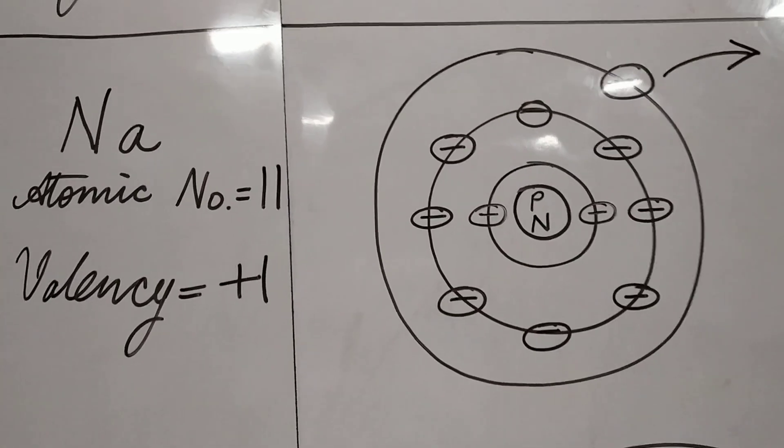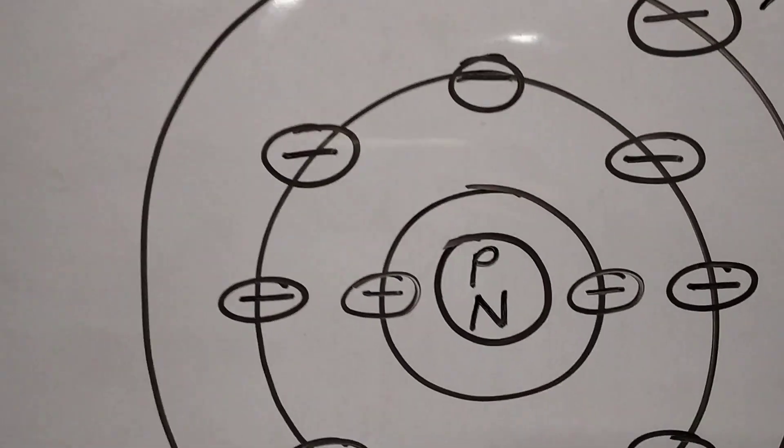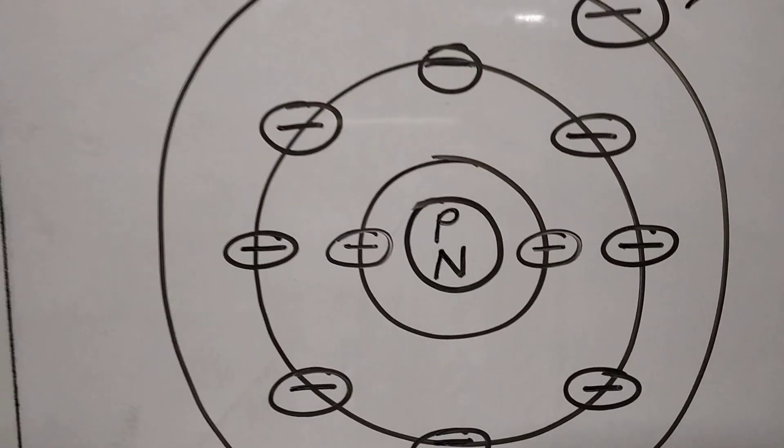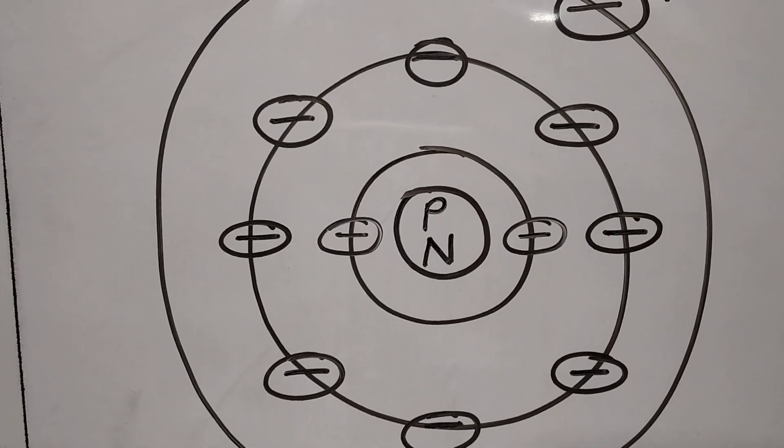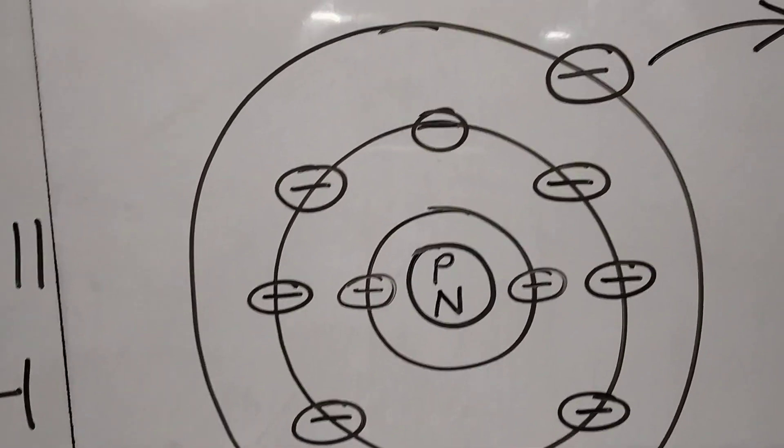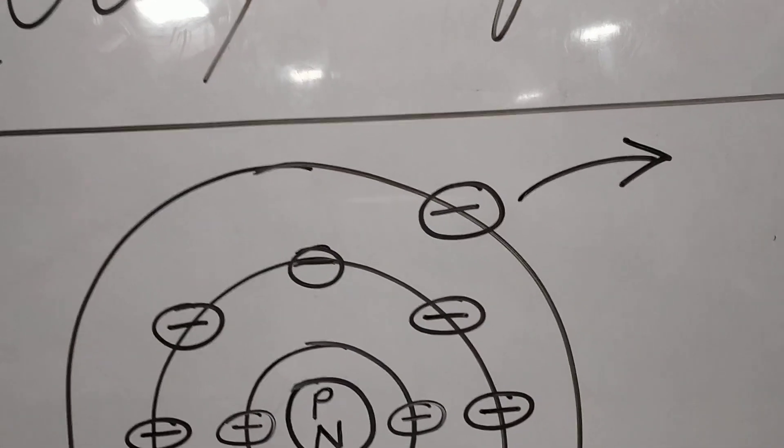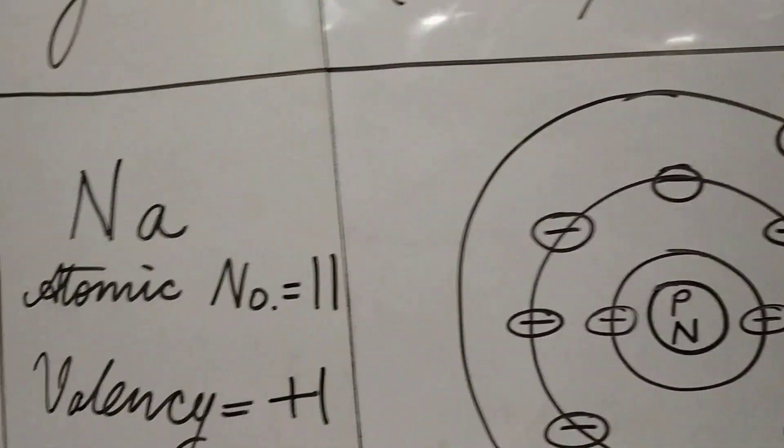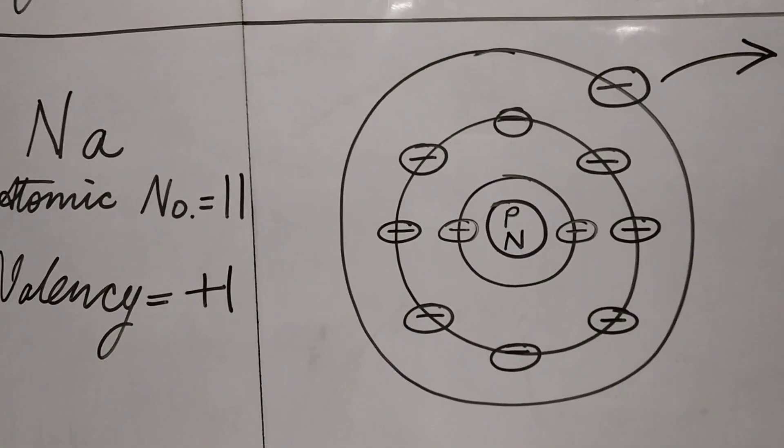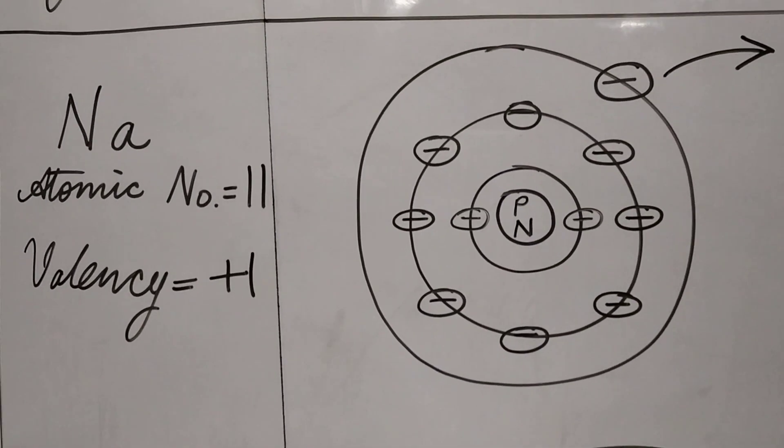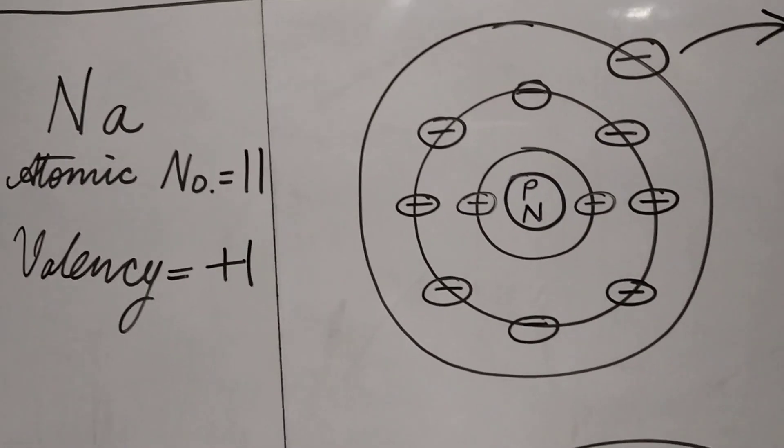The first shell has two electrons. The second shell has eight electrons, so that makes 10. Now, one electron is there in the outermost orbit. It is easier for sodium to lose that one electron rather than to gain seven electrons. Now, why plus 1?